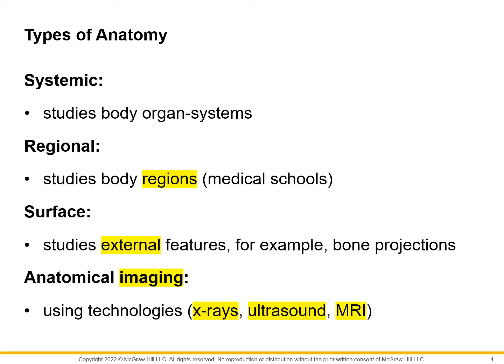Let's now look into the different types of anatomy. First is systemic anatomy, which studies the body organ system. This can be divided into major organ systems like the integumentary, nervous, cardiovascular, and respiratory systems — specific sets of organs grouped together because they perform a similar function or have a similar goal.